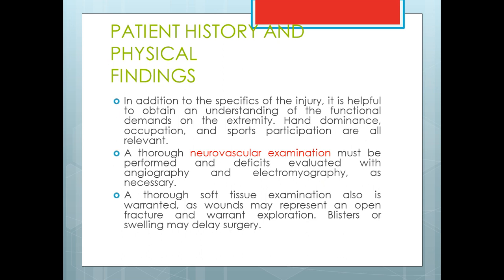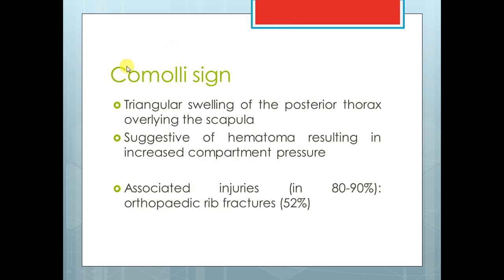Regarding history and physical examination: as usual with a trauma patient, take a proper history focusing on mechanism, then ATLS protocol, then neurovascular examination. An important sign to remember: the scapula is a triangular bone, so there is a triangular hematoma over it — useful for MCQs. Associated injuries: scapular fractures are associated with about 80 to 90% other injuries. The most common is rib fracture, about 50%.